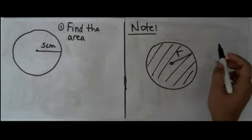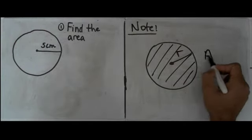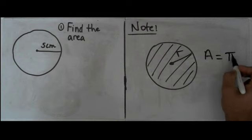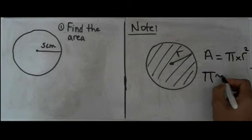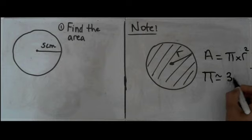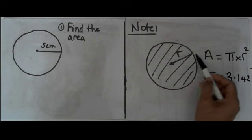you need to use the formula A equals pi times r squared, and pi is approximately equal to 3.142, and r basically stands for the radius.